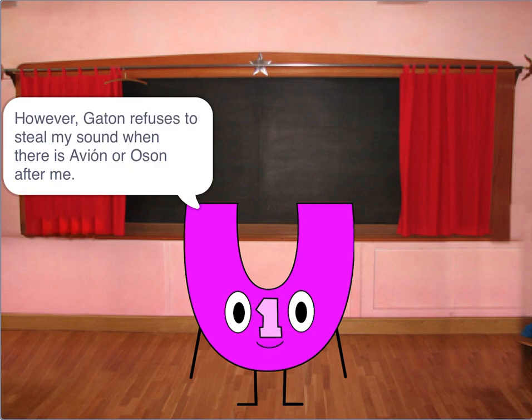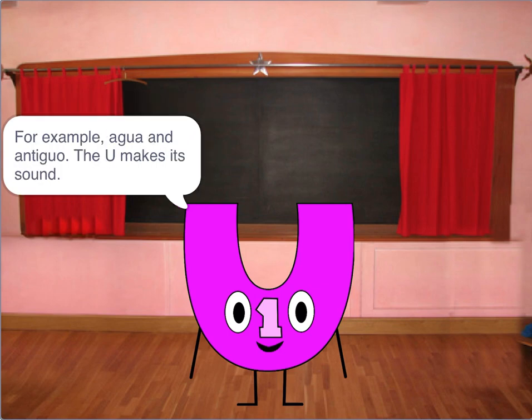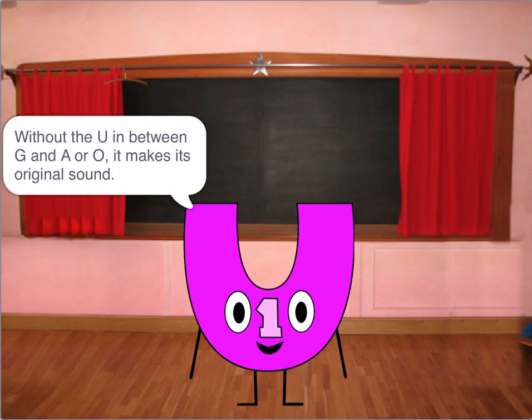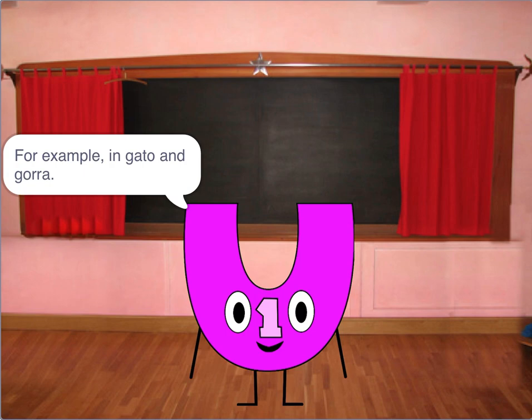However, Ugaton refuses to steal my sound when there is an A or O after me. For example, in antiguo, the U makes its sound. Without the U in between G and E or O, G makes its original hard sound — for example, in gato and gorra.